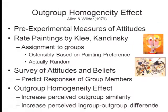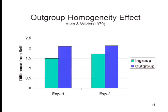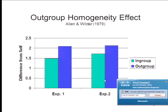In another example, people were randomly assigned to groups based ostensibly on their preferences for paintings by Paul Klee or Vasily Kandinsky. People were then asked simply to predict the attitudes and beliefs of other members of their own and the other group. The finding was that people thought they were more like other people in their own group and quite different from people in the out-group, even though the assignment was made purely arbitrarily. Simply dividing people into us versus them, in-group versus out-group, created this kind of bias.